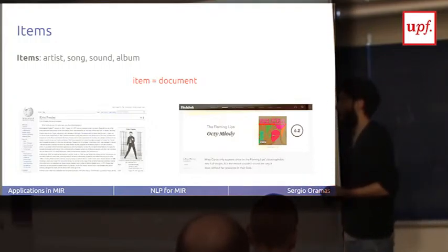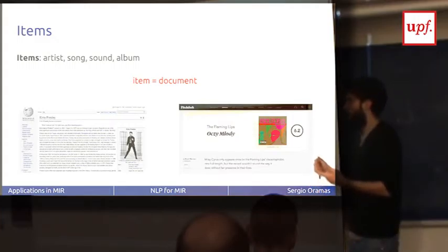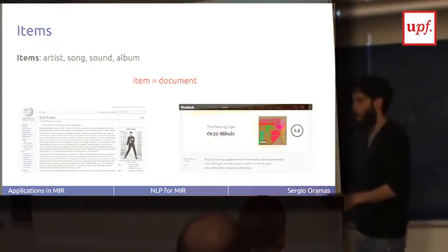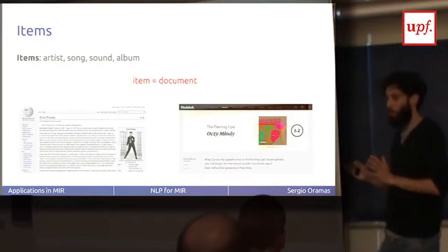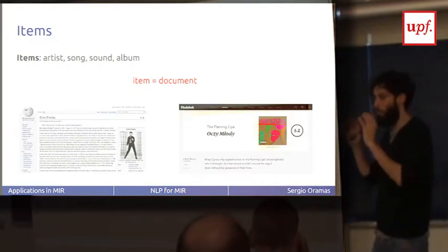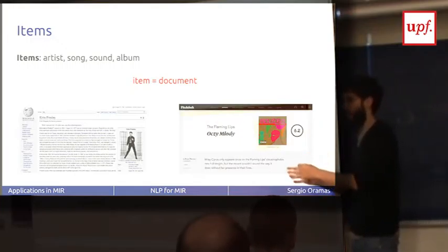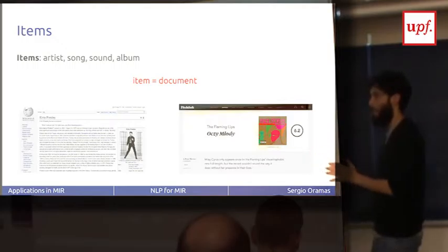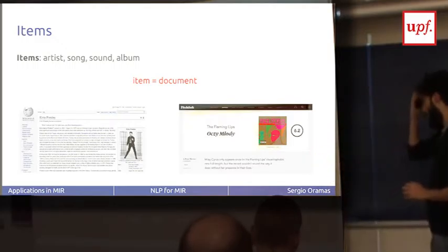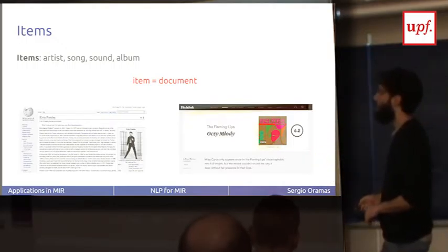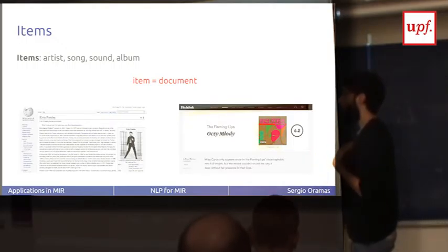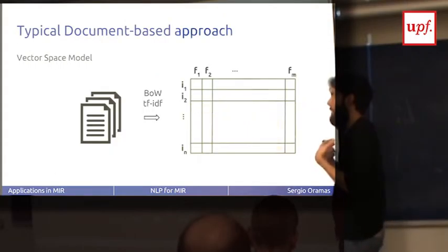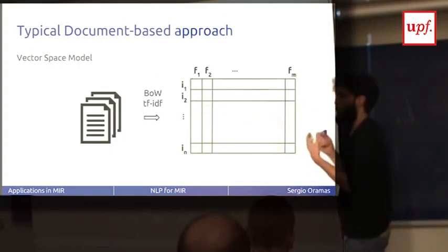At the end, we always have a matrix of items and features. What is an item for us in our problems? Typically in MIR, the features are extracted from the audio and the items are the audio clips — a song is an item, and the features are extracted from the audio.